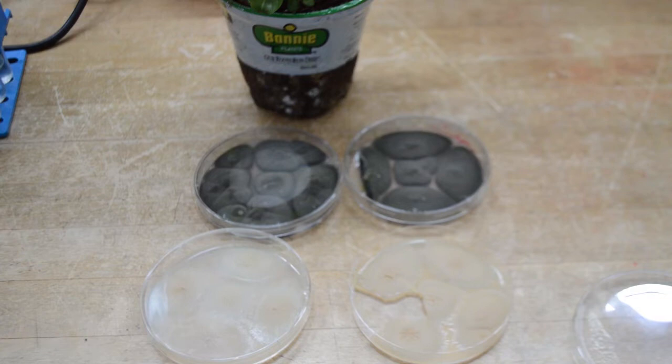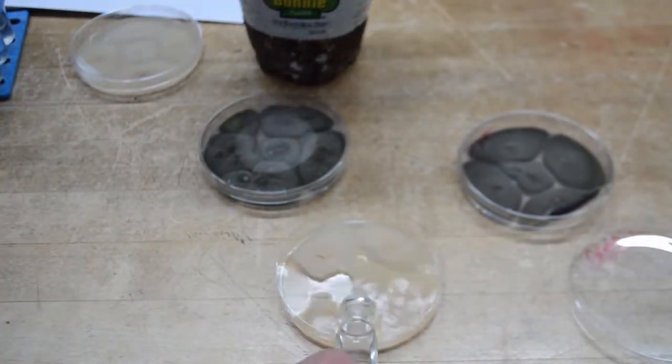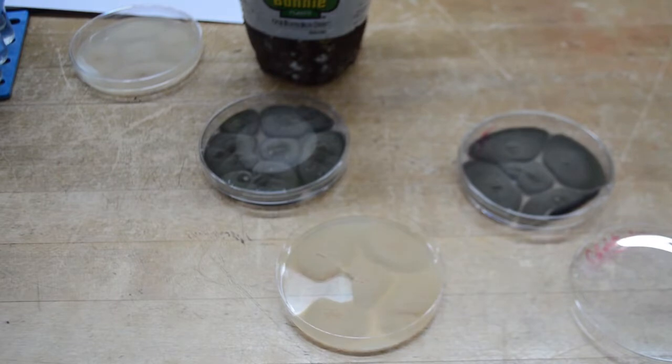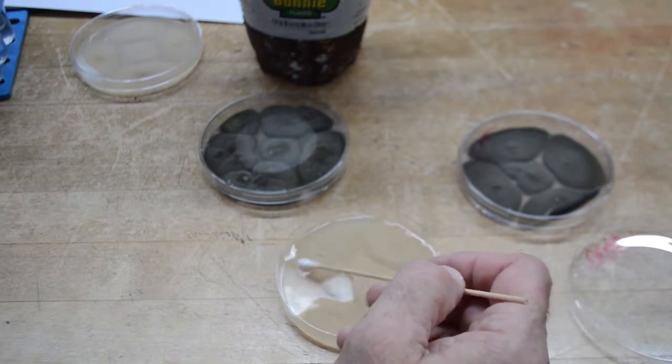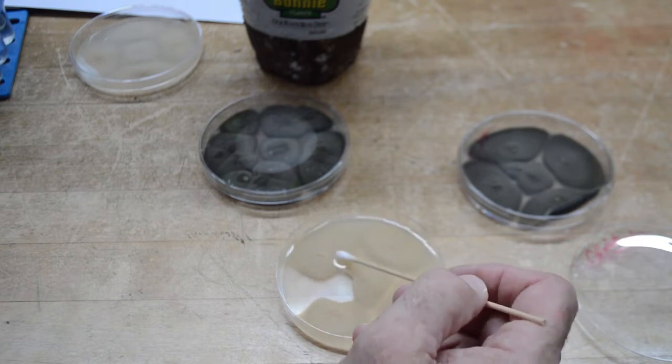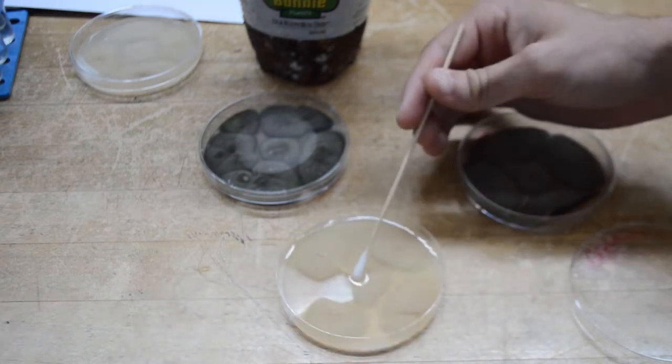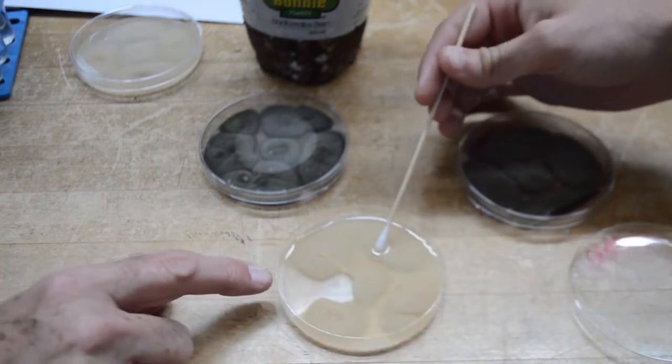We isolated two different fungi from the lesions, so we will test both fungi. The fungi are harvested by adding water to the colonies, then gently brushing the colonies to dislodge the fungal spores. You can see how the water is becoming cloudy.